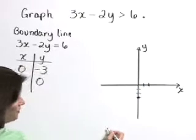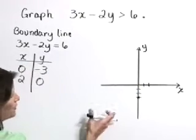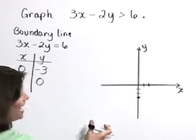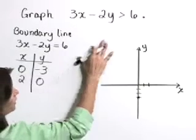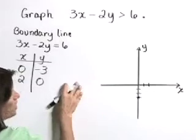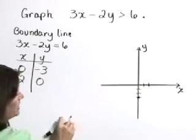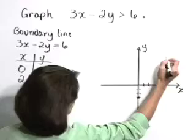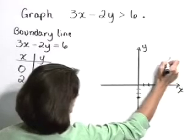Now as we graph this boundary line, we're going to graph it as a dotted or dashed line because our inequality is a strict greater than. Points on the line do not satisfy that inequality, so make sure you graph this as a dotted line.